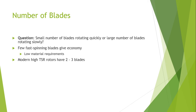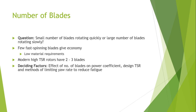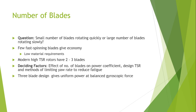The modern high tip speed ratio designs, which have two or three blades, have several deciding factors: the effect of number of blades on power coefficient, the designed tip speed ratio (TSR), and methods of limiting yaw rate in order to reduce fatigue.